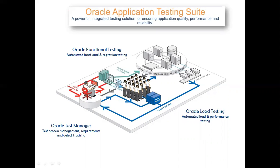This arrow indicates you are performing functional testing on the application infrastructure. Similarly, coming to Oracle Load Testing — you will be creating load scripts using OpenScript, but to run them you will bring them into the Oracle Load Testing product. It's like creating a script using OpenScript, adding it in Oracle Load Testing, and then triggering hundreds and thousands of virtual users to create that load.